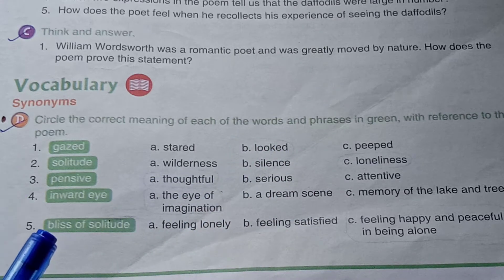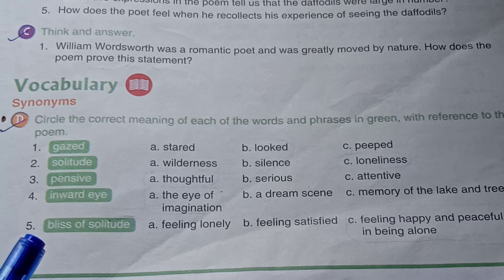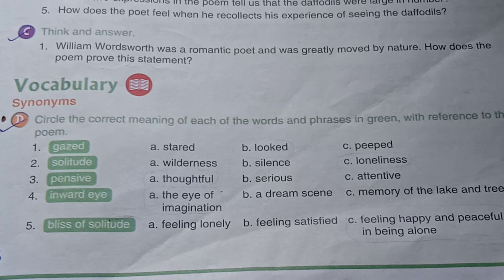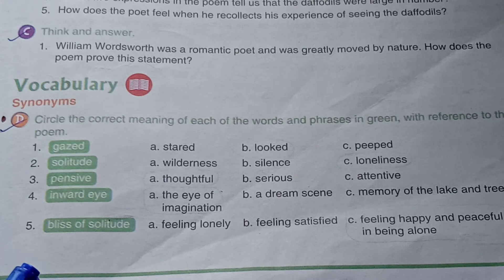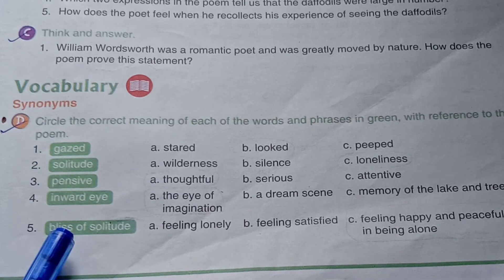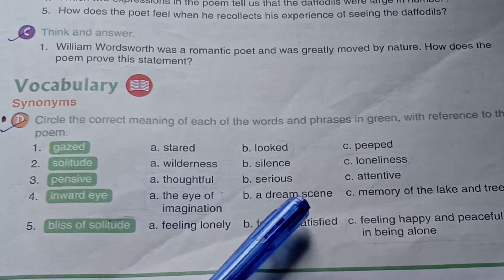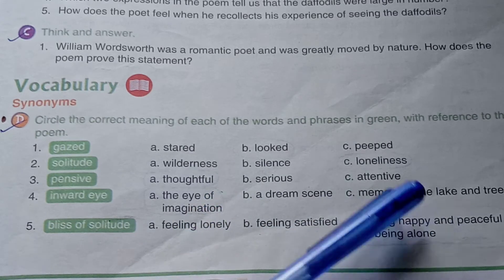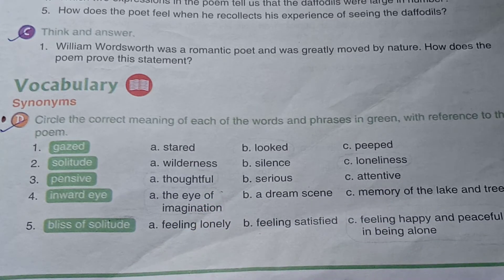Now the second word is 'solitude,' the third is 'pensive,' fourth is 'inward eye,' and fifth is 'bliss of solitude.' Take out the dictionary, find the meaning of these words, and then circle the correct one.